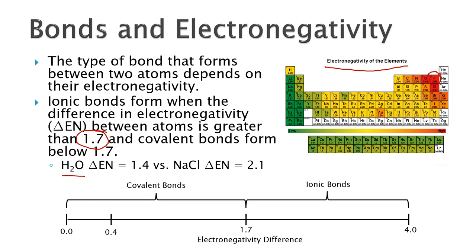For example, if you take water and get the difference in electronegativity—that's what the delta EN means—you end up with 1.4 as the difference, which puts it in the covalent bonds range. If you look at sodium chloride, the difference between sodium and chlorine is about 2.1, which is definitely ionic bond territory. That's a quick way to tell whether the bonds will be covalent or ionic between two elements in a compound.